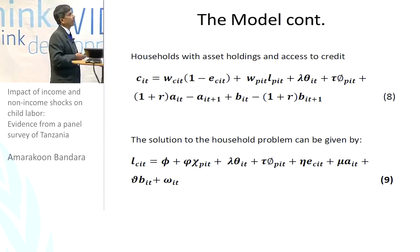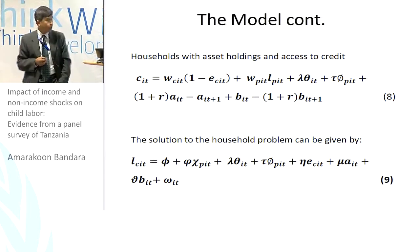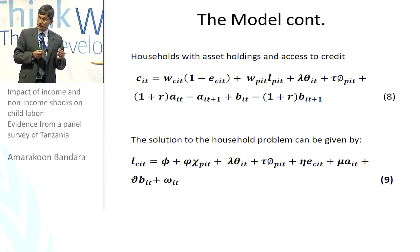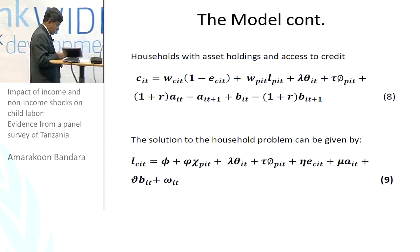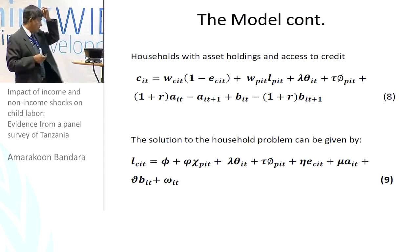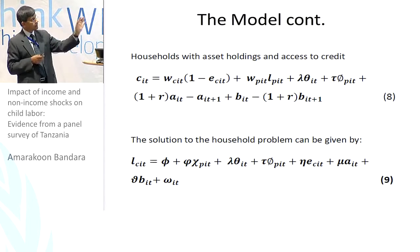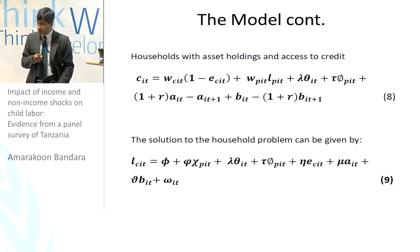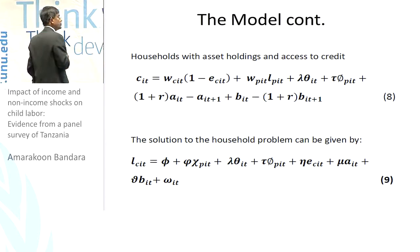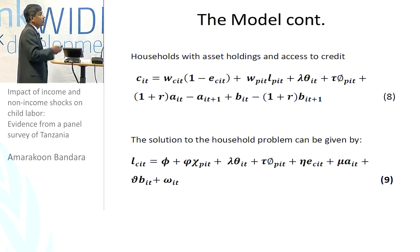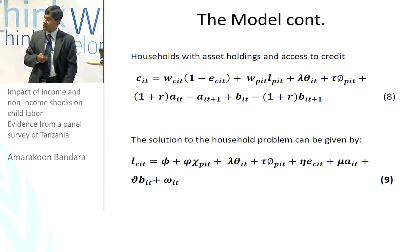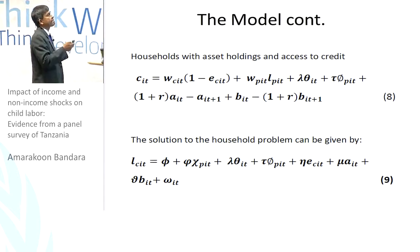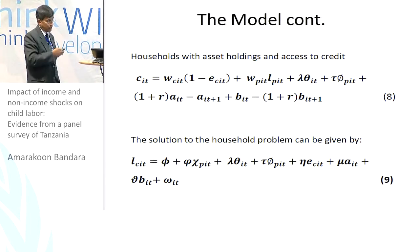The third model considers a household that has both access to assets and access to credit. The budget constraint reflects the previous variables plus two additional components: out of income, a certain portion is paid as interest on borrowings made in the period. The solution is given in model nine. We use Tanzanian data to estimate models reflected in five, seven, and nine.